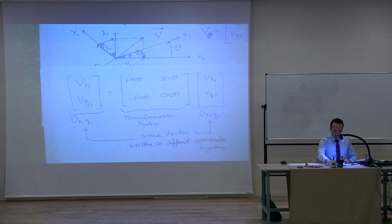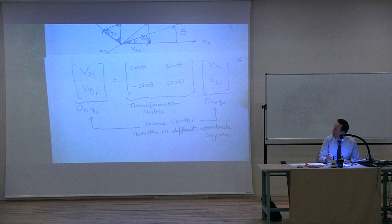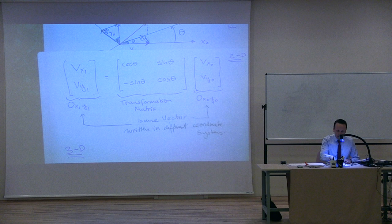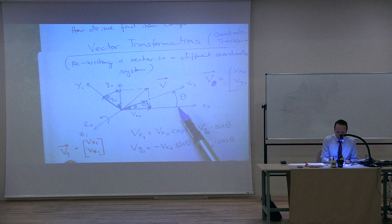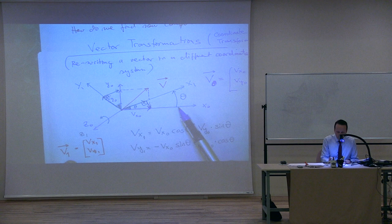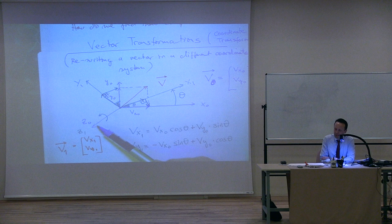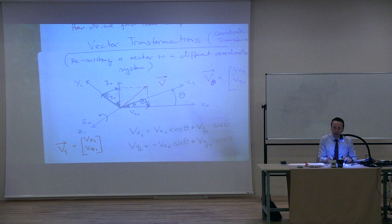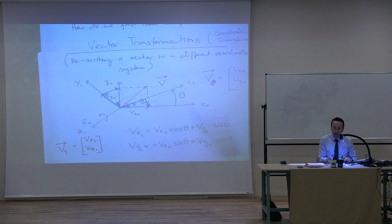Rotating the coordinate system around y₀ by a positive angle, x₀ rotates toward −z₀. You can work through the same trigonometric argument at home. What you get is: vy₁ = vy₀ (unchanged), and the transformation matrix for rotation around y is: [[cos θ, 0, −sin θ], [0, 1, 0], [sin θ, 0, cos θ]] · [vx₀, vy₀, vz₀]. This is again called the transformation matrix — or directional cosine matrix. In this class I prefer the term transformation matrix.